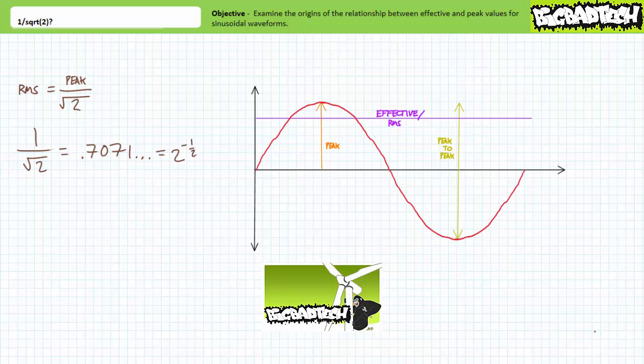This lecture is predicated on the assumption the viewer has watched the sine waves, amplitude and effective values, period and frequency, and phase shift lectures, all available at the Big Bad Tech channel. If you haven't watched these lectures yet or only dimly recall their contents, please take the time to do so now. This lecture presumes the viewer has more than a passing familiarity with time variant sinusoidal phenomenon.